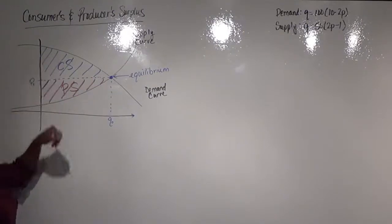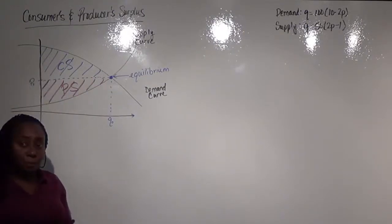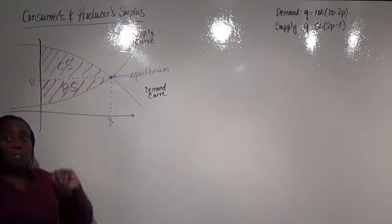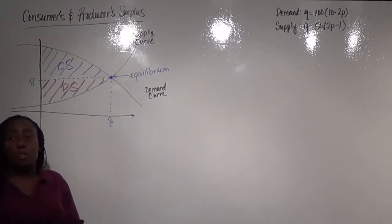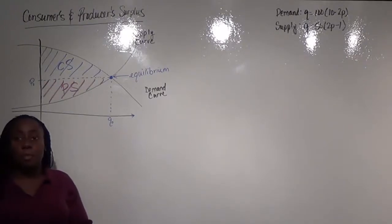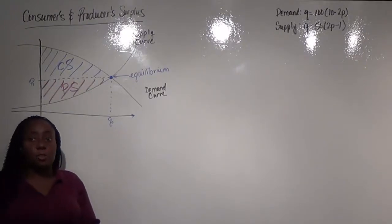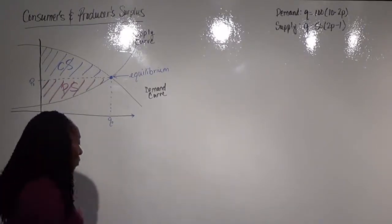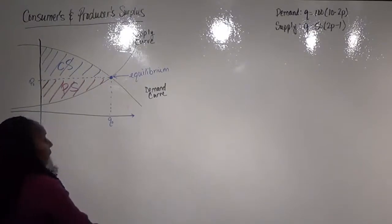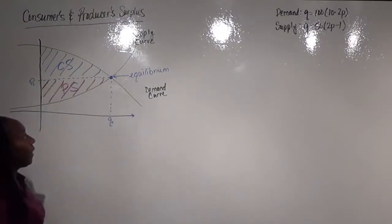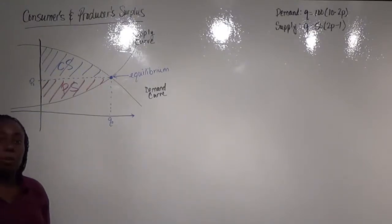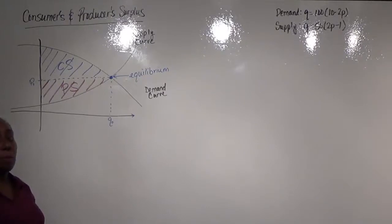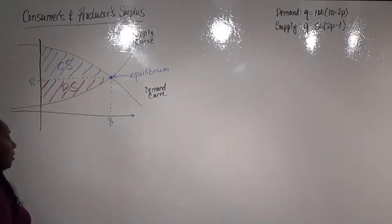Supply is always an increasing curve; demand is always decreasing, at least for most real-world applications. So our supply and demand curves give us our producers and consumers surplus in these relationships. More importantly, if we're looking at these in terms of area, we can come up with formulas to represent both the consumer and the producer surplus.